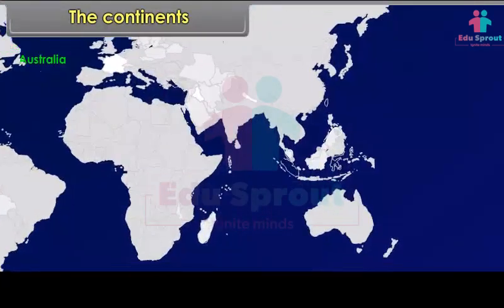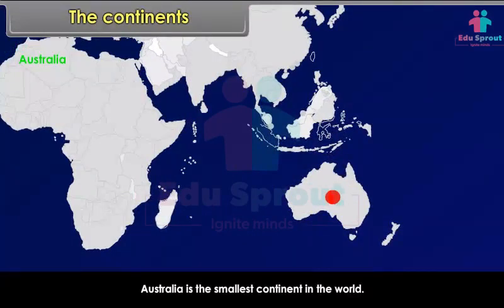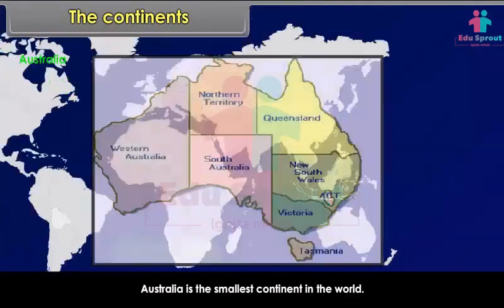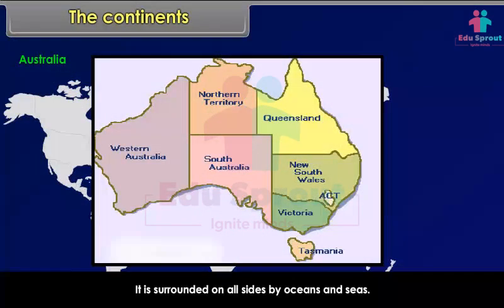Australia is the smallest continent in the world. It lies entirely in the southern hemisphere and is surrounded on all sides by oceans and seas. Because of its smallest size, it is called an island continent.